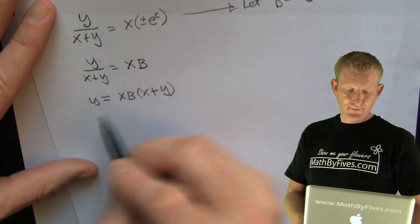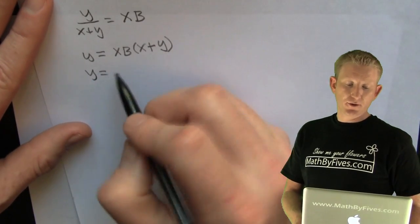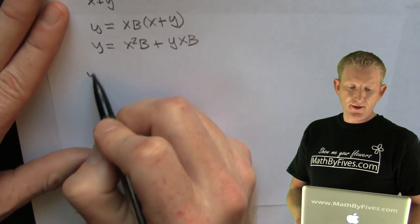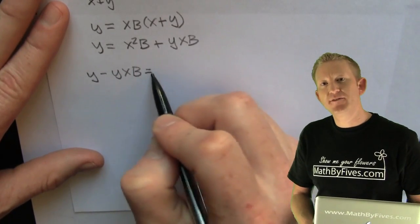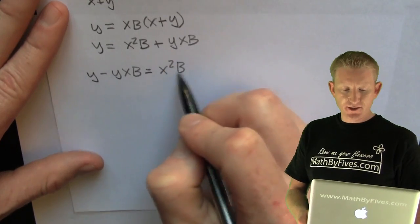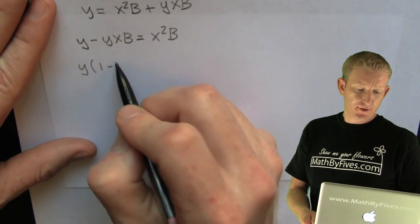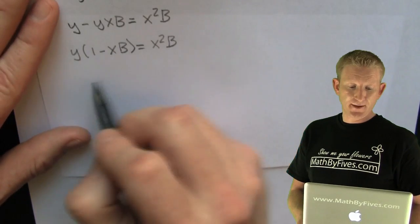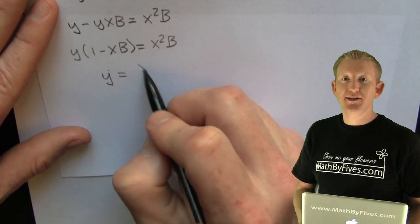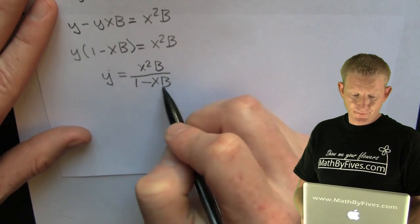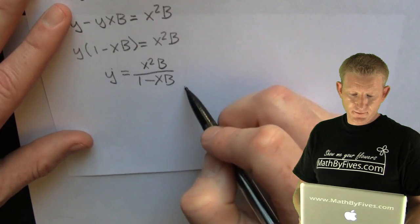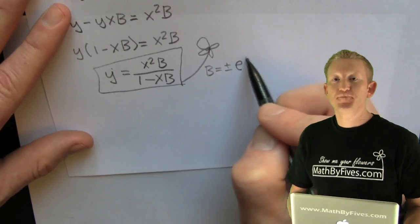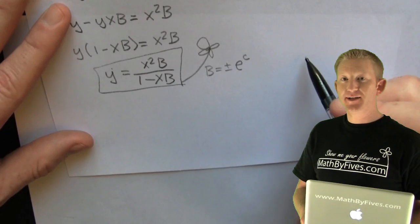He's getting all of his y's on one side because he's going to factor it out. There he goes — distributing in, getting all the y's together, factoring. Come on, finish it! He factors it out and then divides. Looks like he's finishing with a box — that's what he usually does — and he's stating that his constant is what it is.